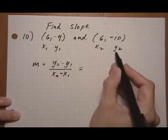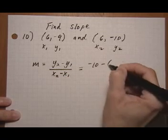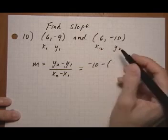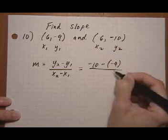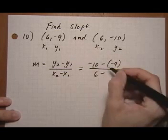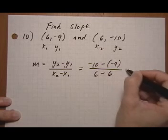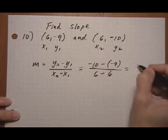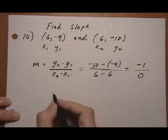Plugging in the values, we get y2 is minus 10, take away y1 is minus 9, all over x2 which is 6, take away x1 which is 6 again. And that equals minus 1 over 0.